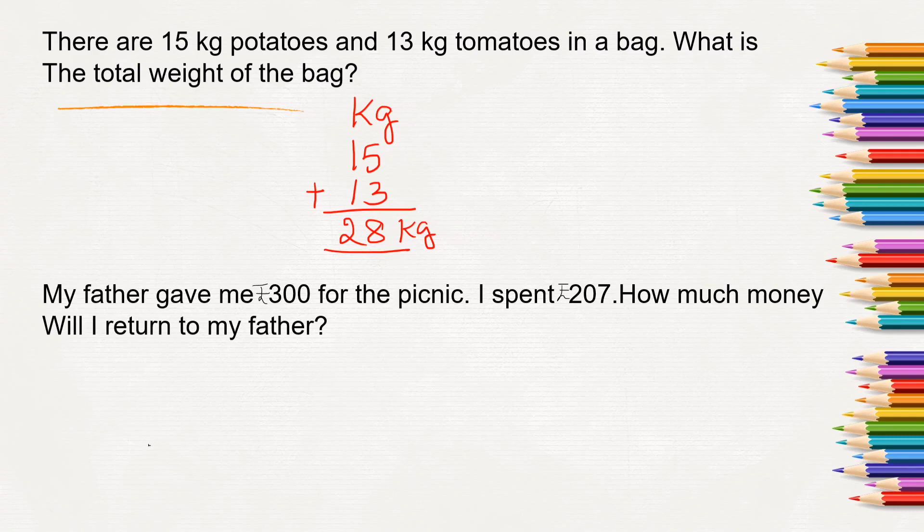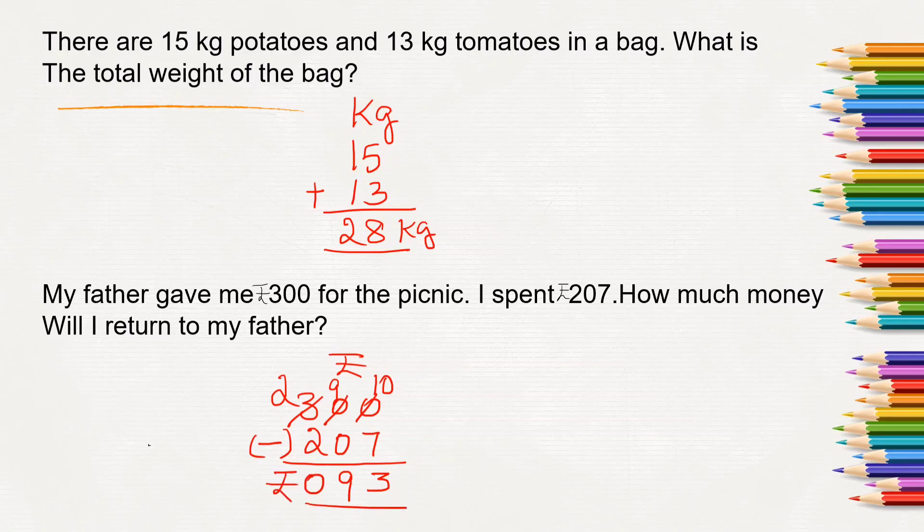Similarly, one more question. My father gave me Rs. 300 for the picnic. I spent Rs. 207. How much money will I return to my father? My father has given me Rs. 300, but I have spent, which means I have to take away, right? Rs. 207. So the remaining amount I will have to return to my father. What is the remaining amount? We will have to find out. From 0 we cannot take away 7, so all the way from 3 we will borrow. 3 becomes 2. Again 10, again from 10 we are borrowing, so 0 becomes again here 9 and then 10. 10 minus 7 will be 3, 9 minus 0 is 9 itself, 2 minus 2 will be 0. So here we are left with Rs. 93. So how much money will I return to my father? Rs. 93 has to be returned.